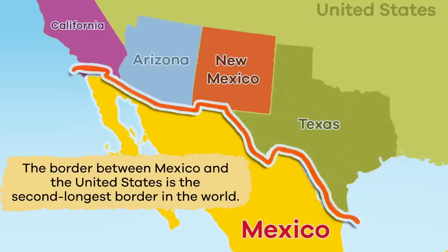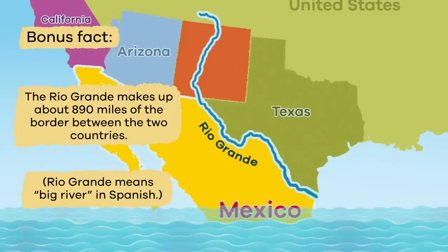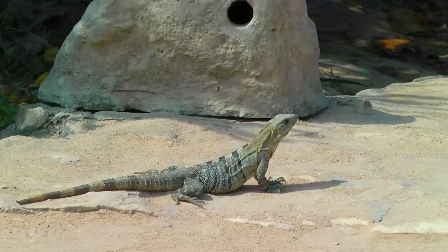The border between Mexico and the United States is the second longest border in the world — about 2,000 miles long. The Rio Grande makes up about 890 miles of the border between the two countries. That is a super long distance and would be quite the swim!